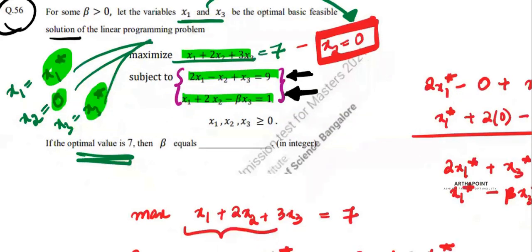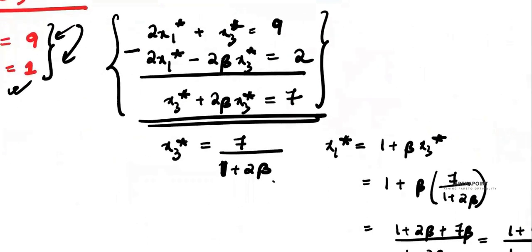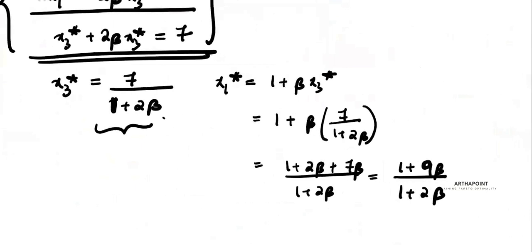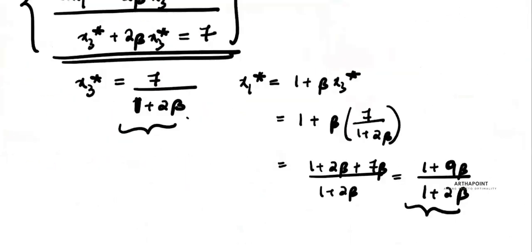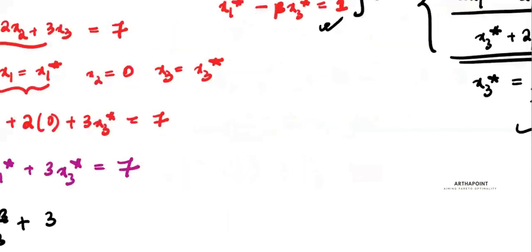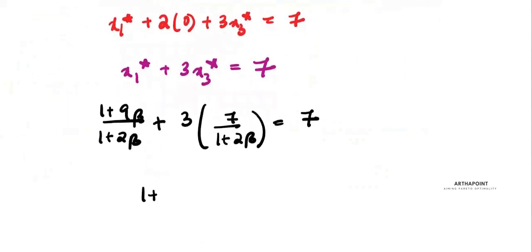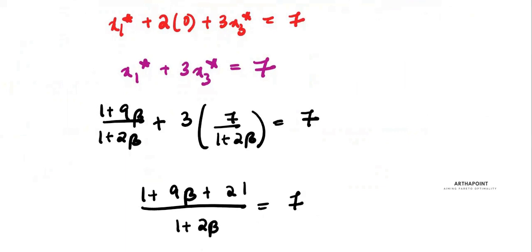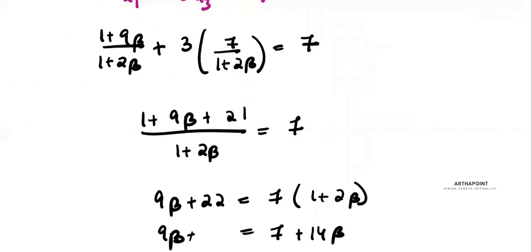Substituting: (1 plus 9 beta)/(1 plus 2 beta) plus 21/(1 plus 2 beta) equals 7. So (9 beta plus 22) upon (1 plus 2 beta) equals 7, which gives 9 beta plus 22 equals 7 times (1 plus 2 beta), that is 9 beta plus 22 equals 7 plus 14 beta.